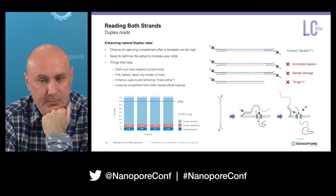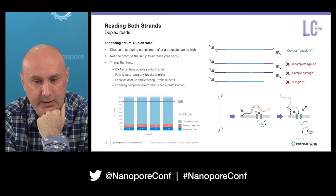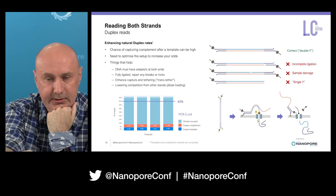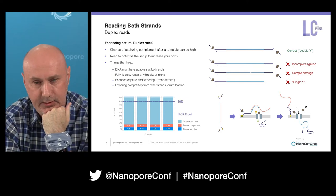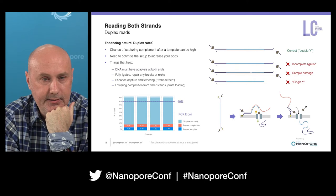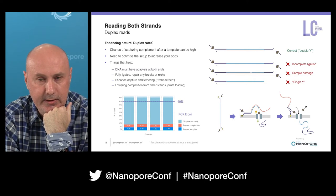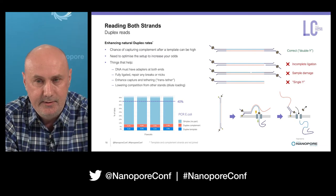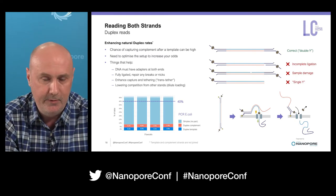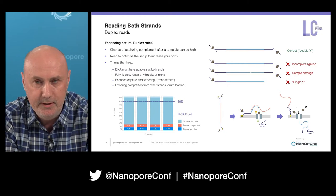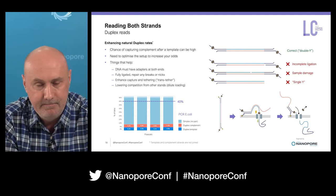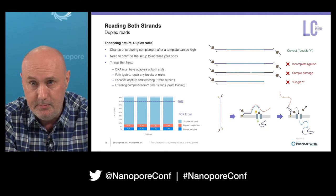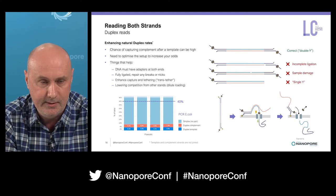Here's how this works. The first strand gets captured — you can see the strand going through, you can see the tether on the membrane. Then when that's through, the second strand, the complement, will follow it. As a change of terminology: I'm going to call the single-pass, single-molecule, single-strand reading 'simplex'. And where we get both strands and jointly base call them, I'm going to call that 'duplex' — duplex sequencing from now on. So simplex and duplex.